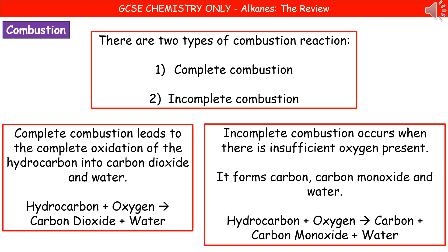They could ask you to write a balanced symbol equation. Hopefully you remember: oxygen is O₂, carbon dioxide is CO₂, water is H₂O, carbon monoxide is CO, and carbon is just C. Once you've got that, work through balancing as usual. Remember, if it's a two-mark balancing question, you get your first mark just for writing the chemical formulas — so even if your balancing goes wrong, you can still get one of those two marks by writing the correct chemical formulas.